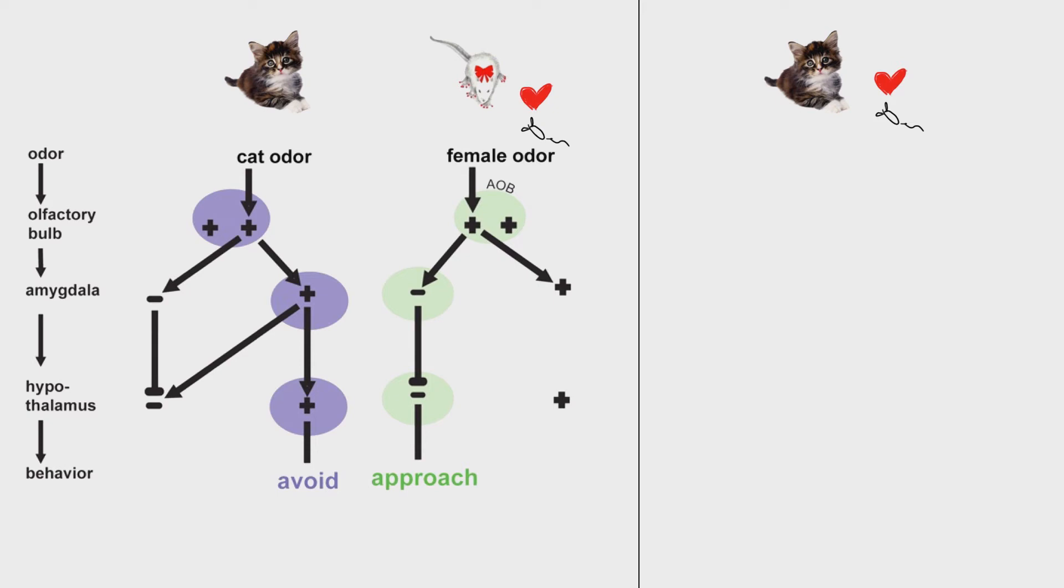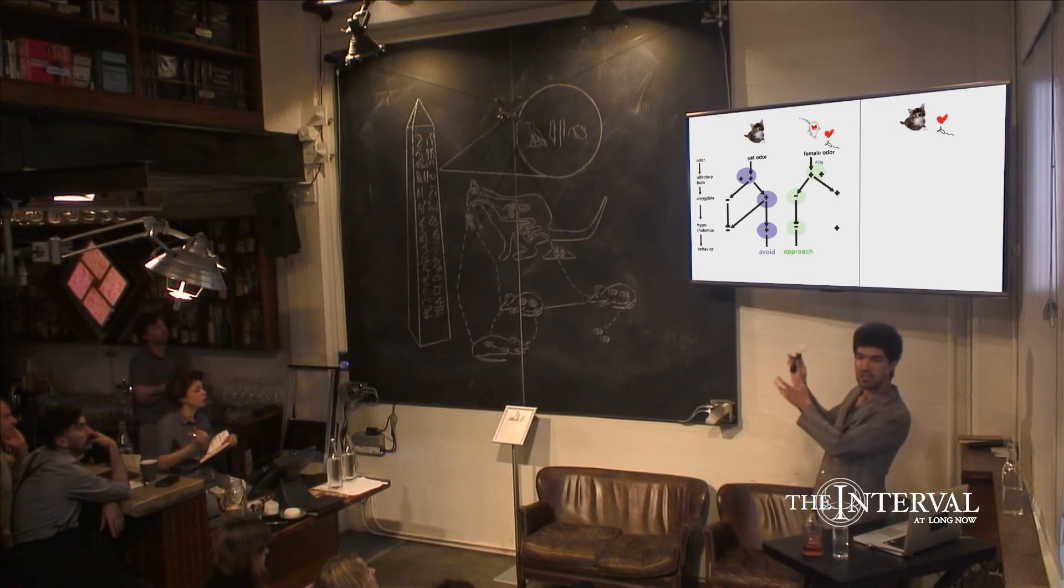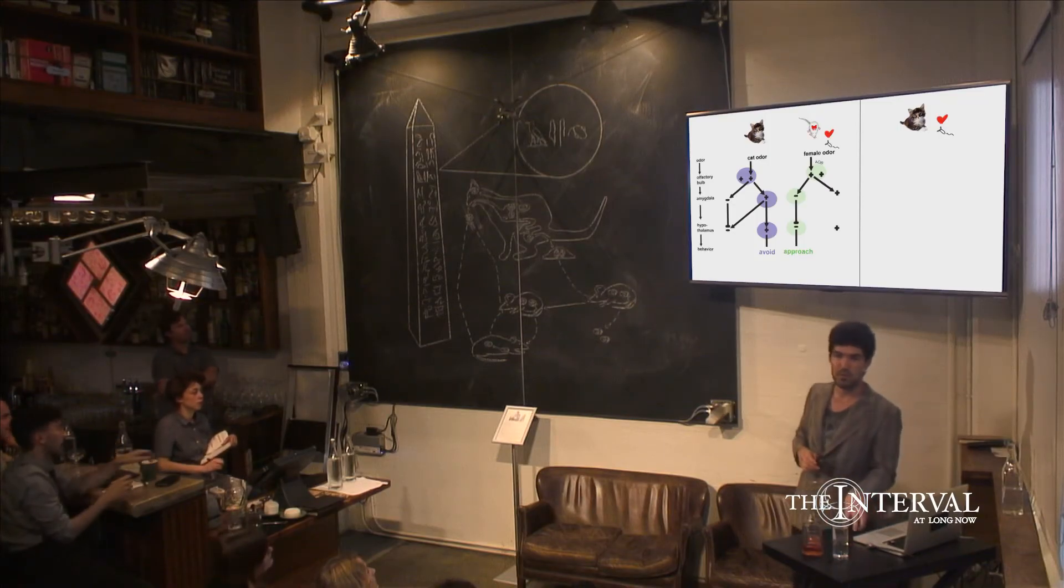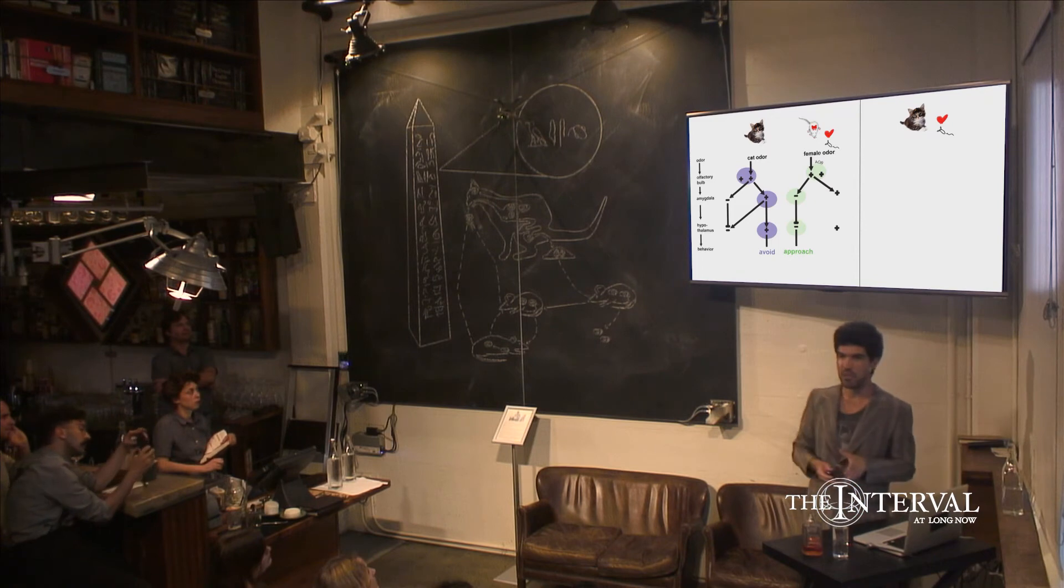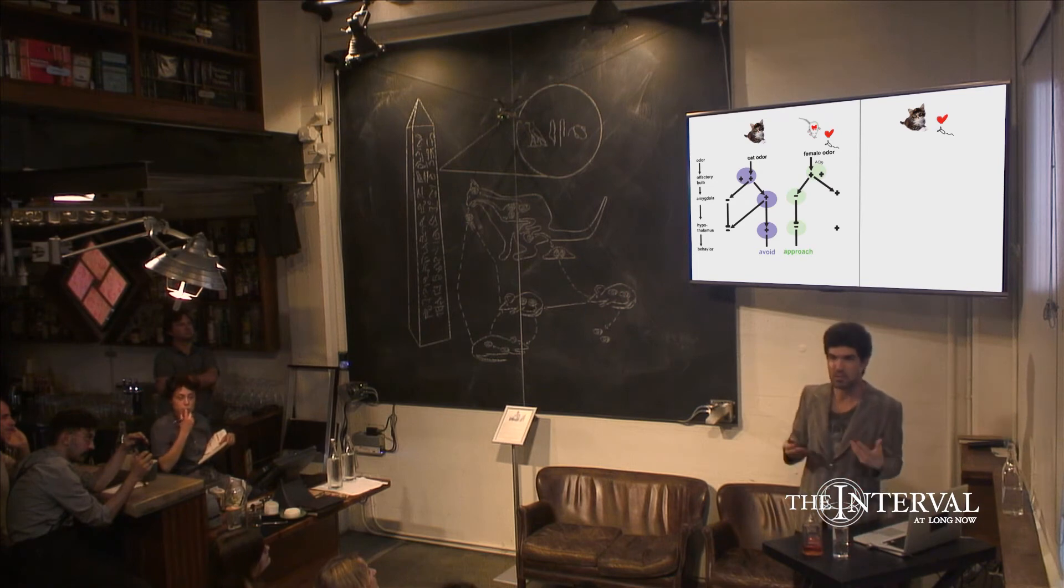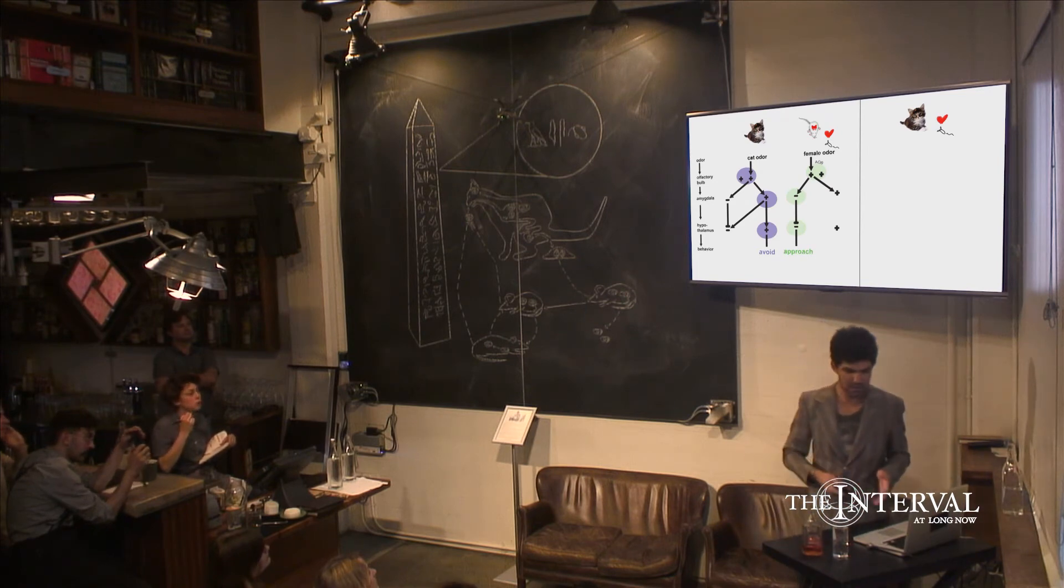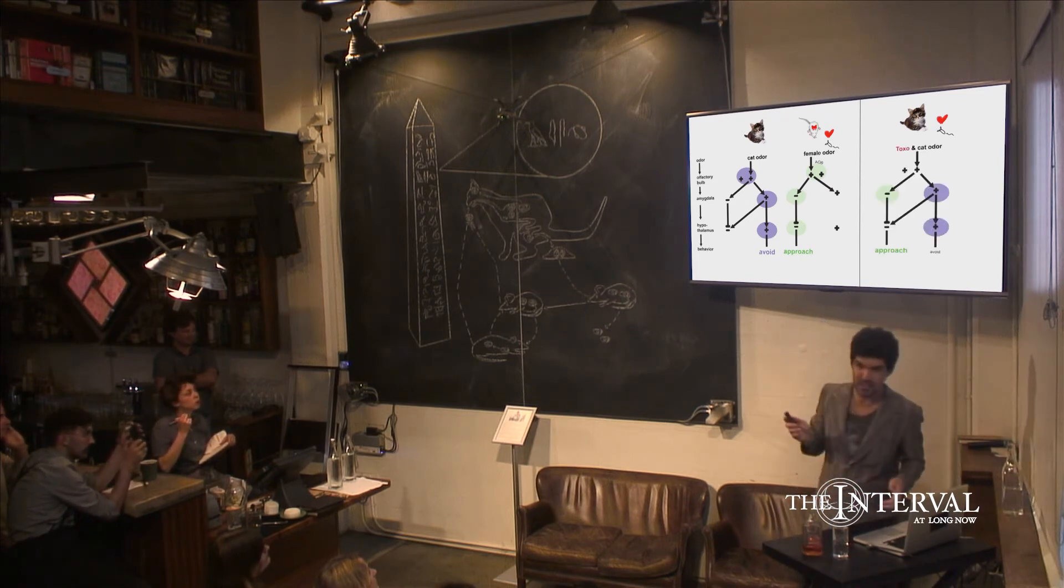One: if it's really attracted to the cat, we'd expect brain activity similar to when you expose a male to a female. If it's afraid but less afraid, you might expect similar activity to normal cat exposure, but reduced. That's not quite how the brain works, but something like that. What we actually get is a little of column A, a little of column B.